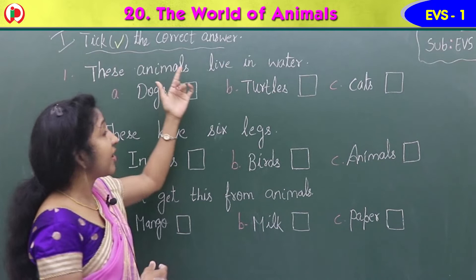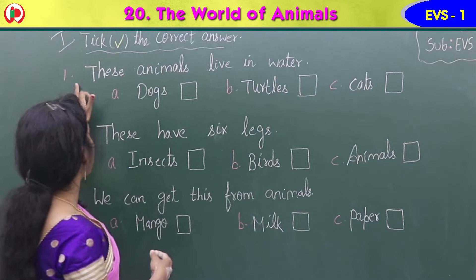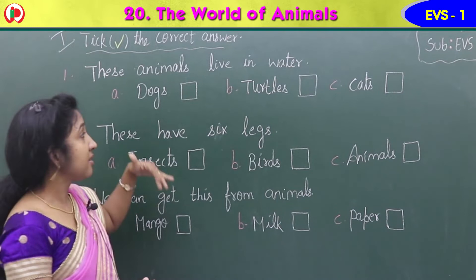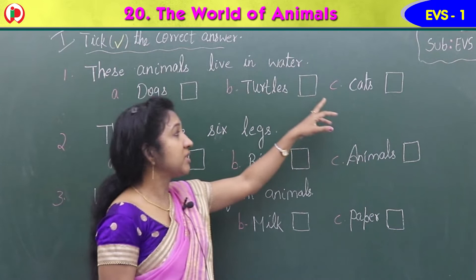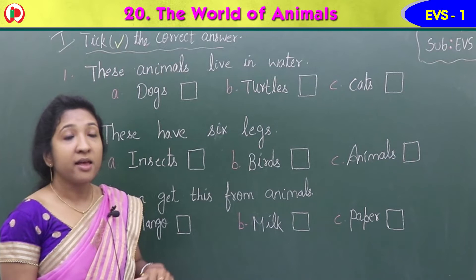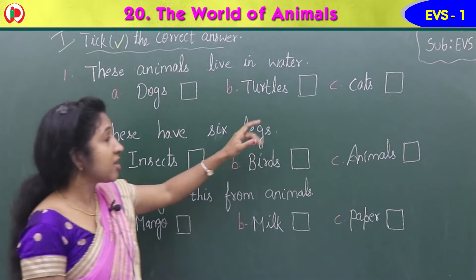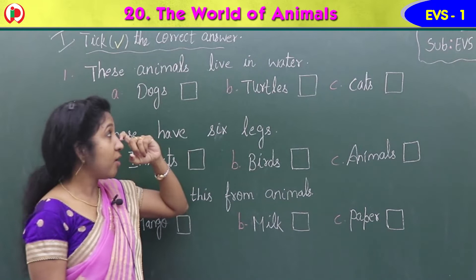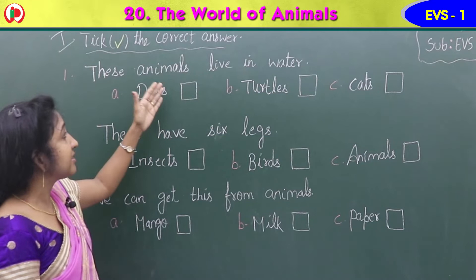Our first exercise in the workbook is Exercise 1: Tick the correct answer. We have three questions here. All three questions have three options: option A, option B, option C. You have to read the question carefully and check which option is correct, then tick it in the square box. First question: these animals live in water.